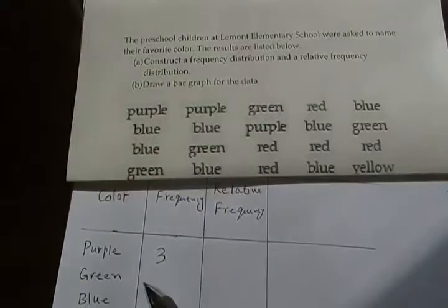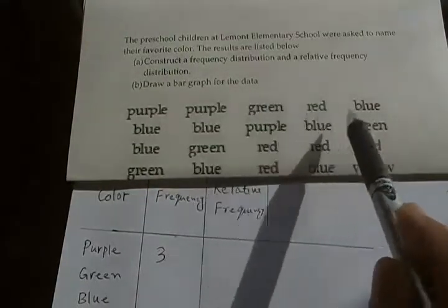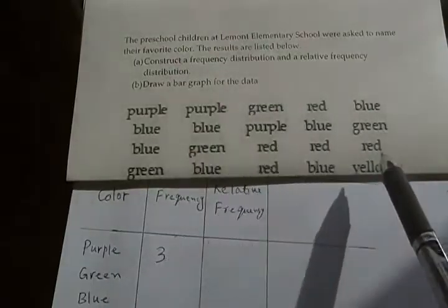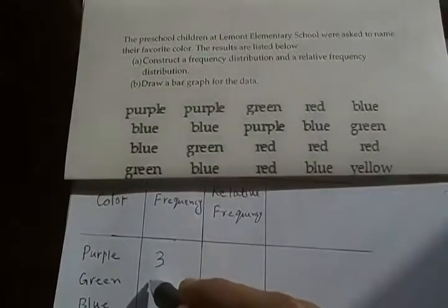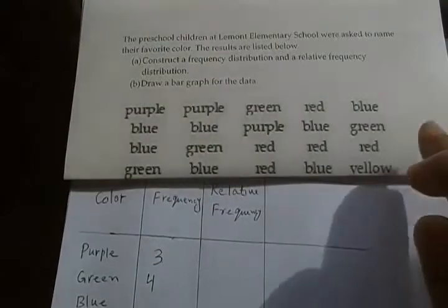Next is green. How many times does green appear in this data? 1, 2, 3, and 4 - there are 4. Green color appears 4 times in this data.